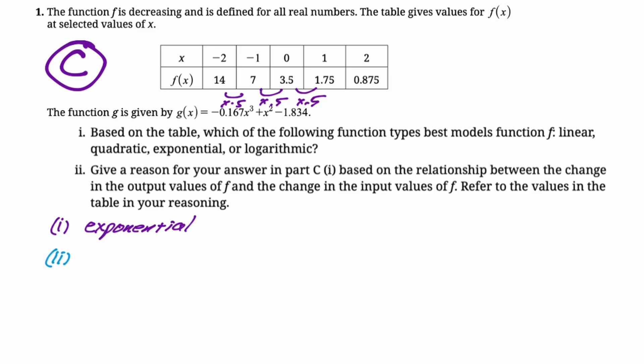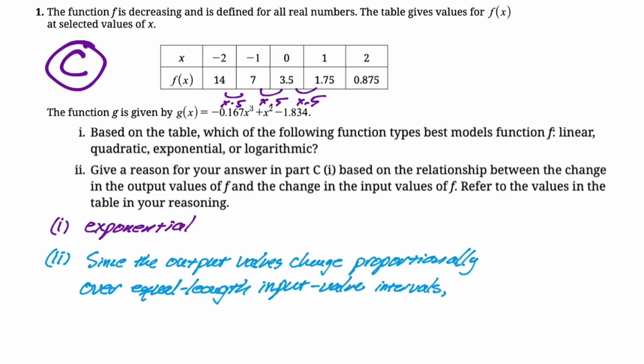So I have my students memorize these. I actually quiz them, like just write down the explanation. So we start off with, since the output values change proportionally over equal length input value intervals. I have a lot of trouble saying that. I feel like a lot of the words sound the same and maybe there are just too many Vs. So since the output values change proportionally over equal length input value intervals, an exponential model fits best. And that's all we need to do. So that's the first question. I hope this was helpful and good luck.